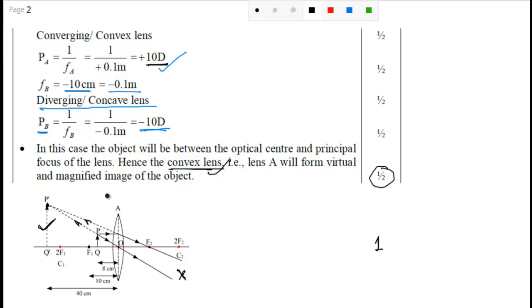So you are getting virtual as well as magnified image of the object when you are putting an object in between optical center and principal focus in case of convex lens. I hope it is clear to all of you. Thank you.